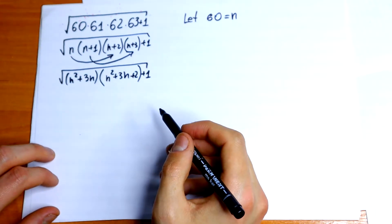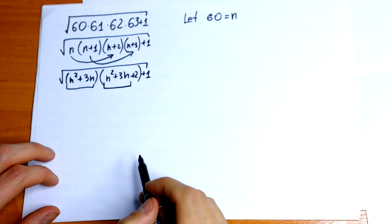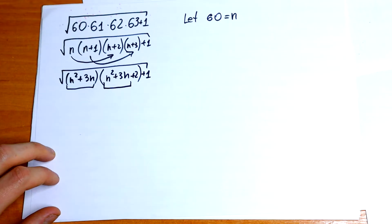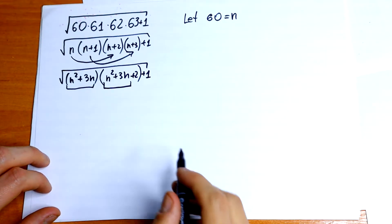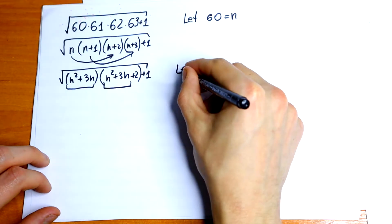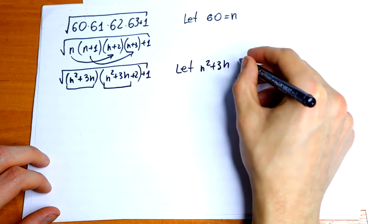What we're gonna do next. We have this n square plus 3n and this n square plus 3n. So we can let this n square plus 3n as, for example, t. So let n square plus 3n as t.